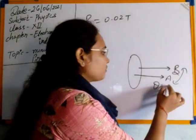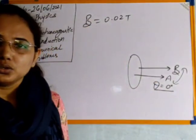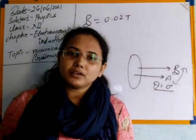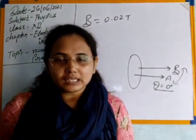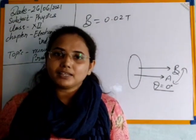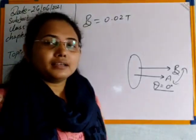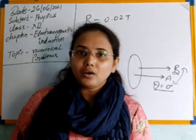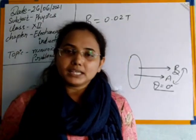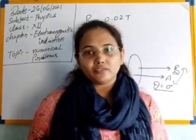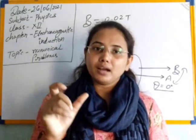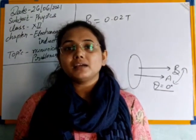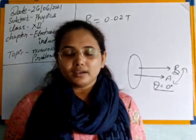Since the area vector is aligned with the magnetic field, theta = 0 degrees. The flux phi = BA cos(theta). With theta = 0, we get maximum flux. Now the loop radius starts to decrease, meaning the area of the loop is changing. Whenever the area changes, the flux linked with the coil changes, and due to this change in flux, electromagnetic induction gives us an induced EMF and current.